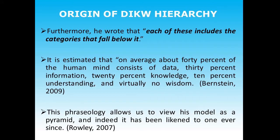He wrote that each of these includes the categories that fall below it — wisdom at the top, knowledge below wisdom, information below knowledge, and data at the bottom. It is estimated on average that about 40% of the human mind consists of data, 30% information, 20% knowledge, 10% understanding, and virtually no wisdom — a quote given by Bernstein in 2009. This phraseology allows us to view his model as a pyramid, and it has been likened to one ever since.